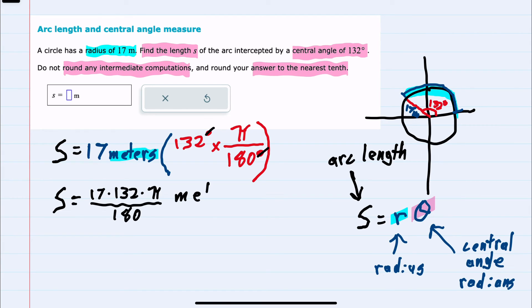My units are meters. Doing this calculation and rounding to the nearest tenth of a meter, we have 39.2 meters as the length of the arc, 132 degrees around that circle with a radius of 17 meters.